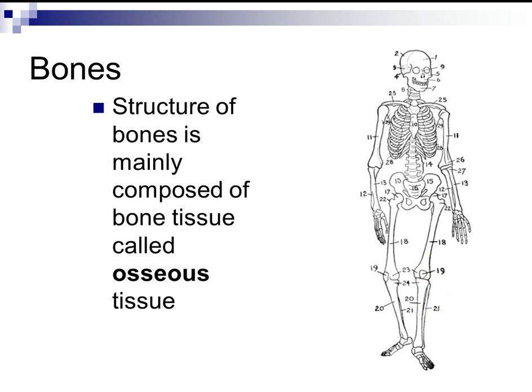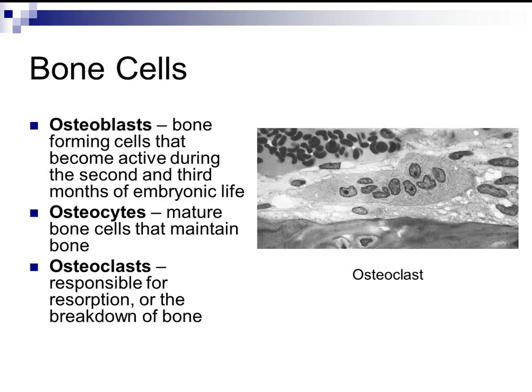The structure of bone is mainly composed of bone tissue called osseous tissue. There are three different types of bone cells. The first is osteoblasts — bone-forming cells that become active during the second and third months of embryonic life, when babies are in the mother's womb.